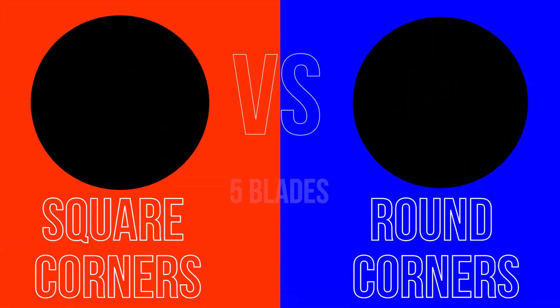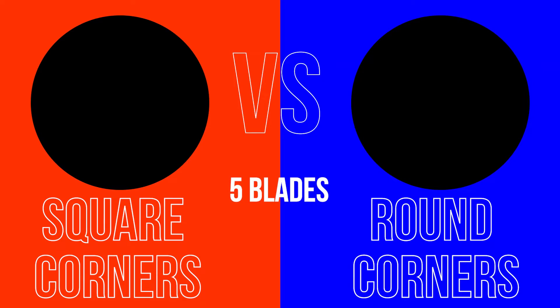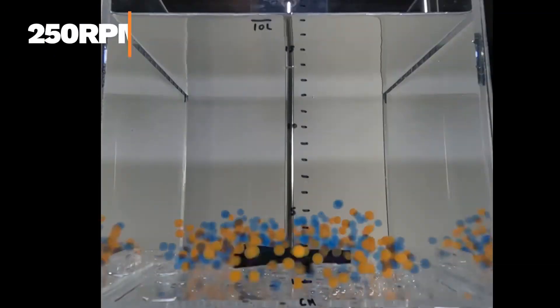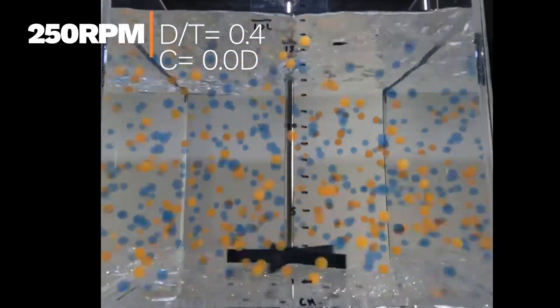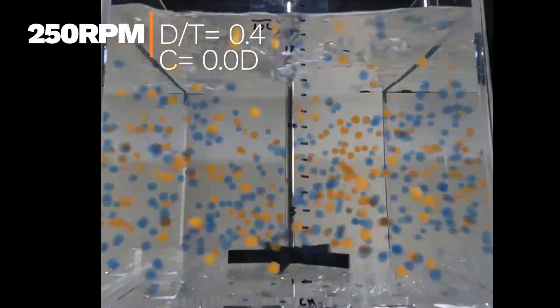Now that we understand the relationship between number of blades, let's test the theory that rounded corners in a square tank improve agitation. It's easy to see agitation at the interface, which is where our floating biomass naturally agglomerates.